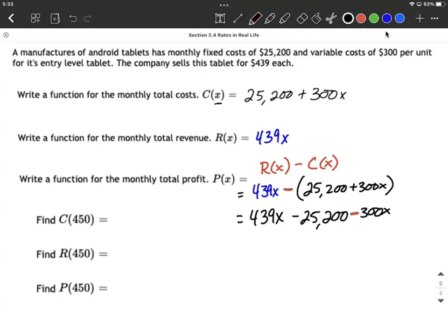Alright, we can combine like terms and make a little bit nicer looking answer here. We can say $139X minus $25,200. And that's going to be our profit function P of X.